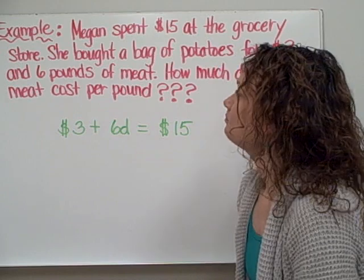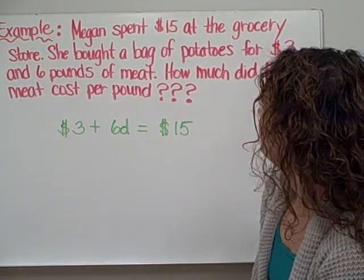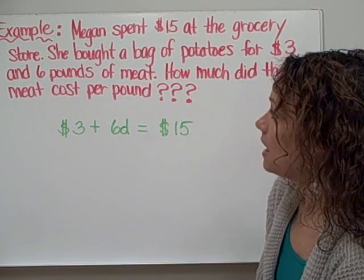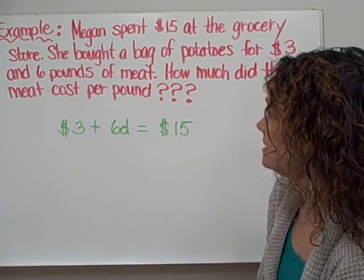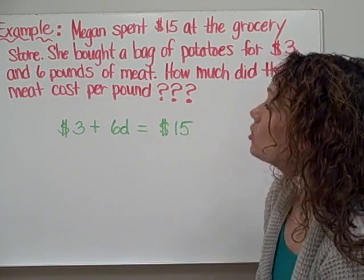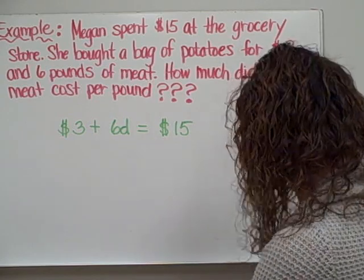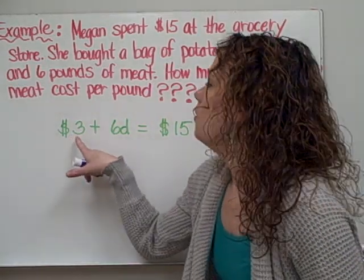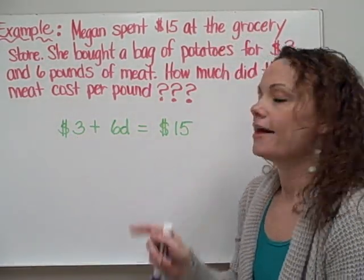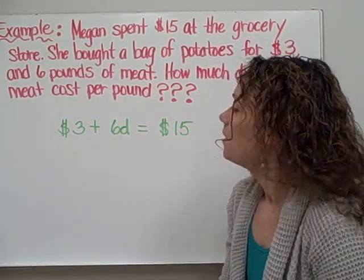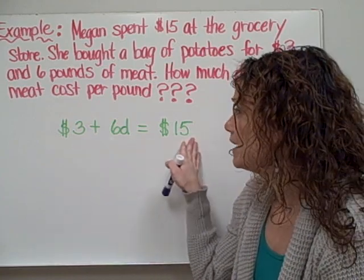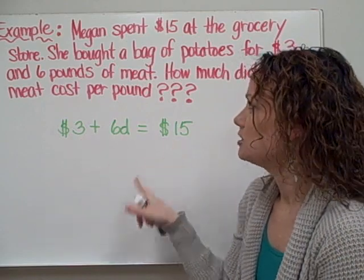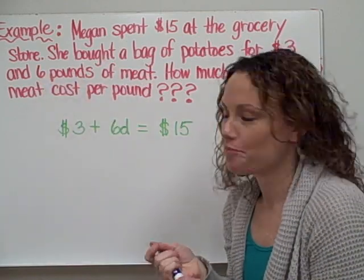Let's take a look at our first example. Megan spent $15 at the grocery store. She bought a bag of potatoes for $3 and 6 pounds of meat. How much did the meat cost per pound? Sounds like a two-step problem. What I've written is an algebraic equation — it's an equation because it has an equal sign. Let's look at the numbers and letters I chose to represent our word problem.